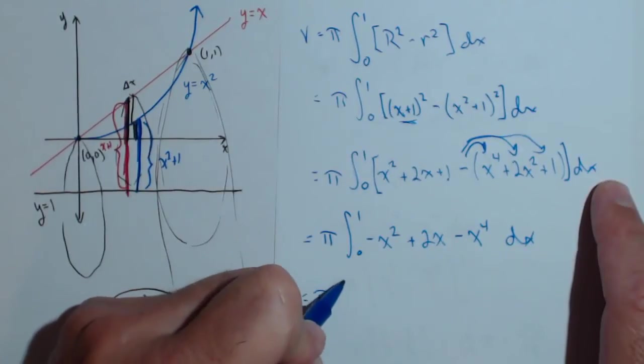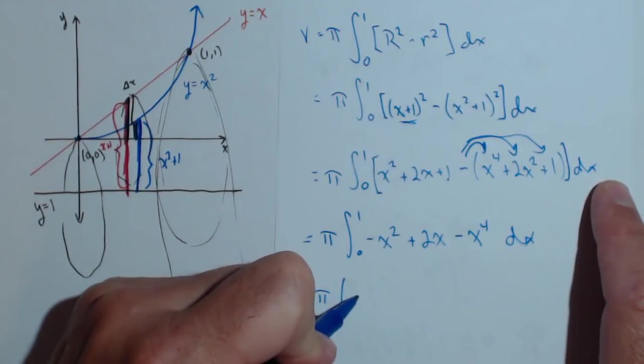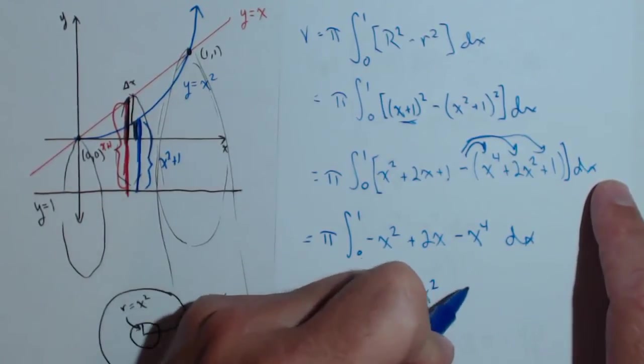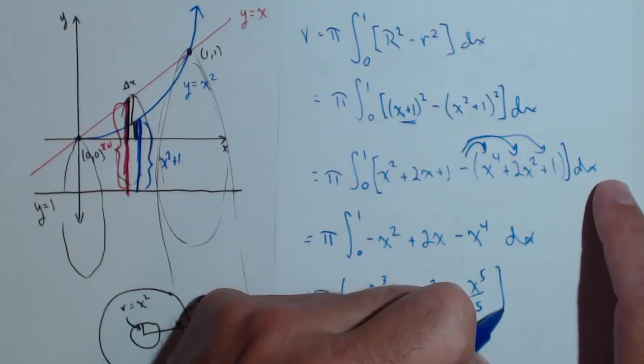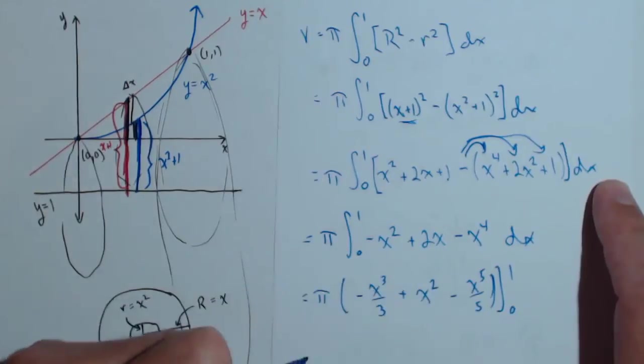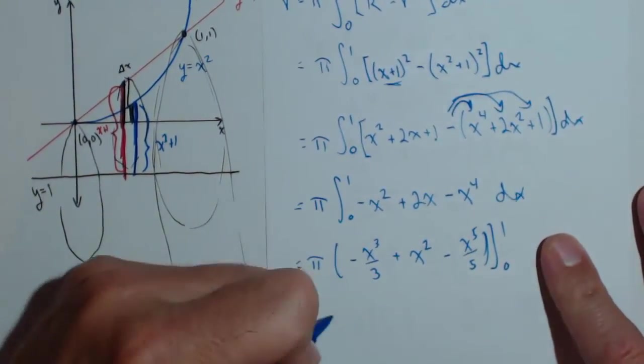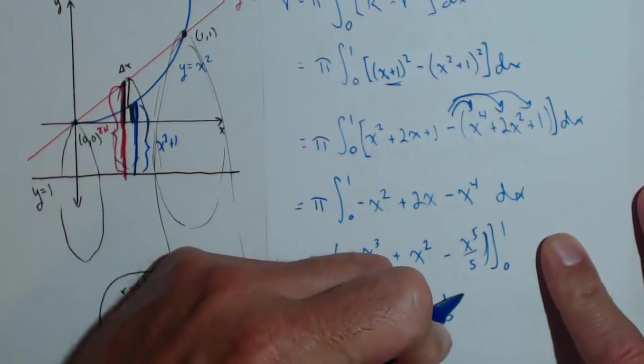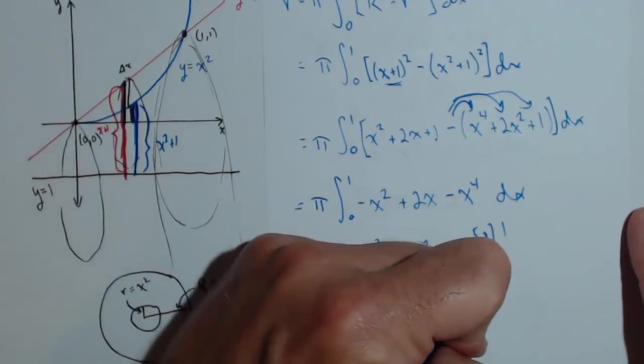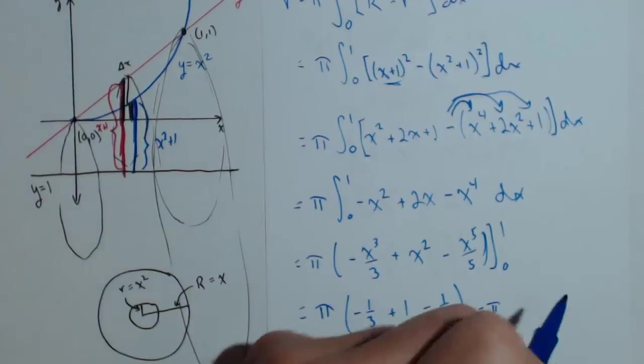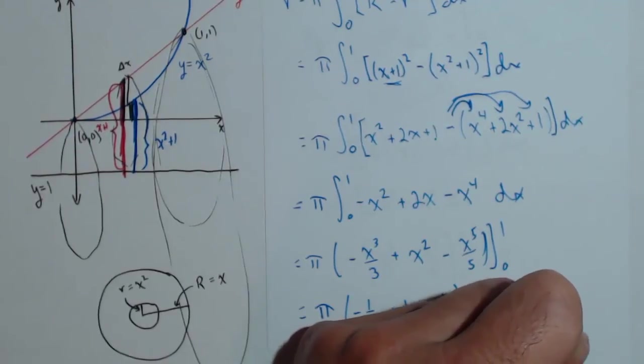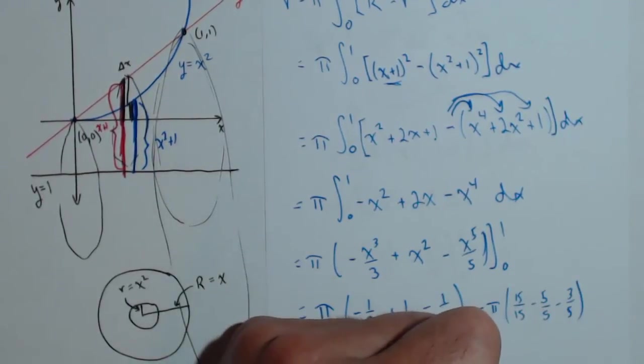I'll just do this one piece by piece. When I go to find my antiderivative, we'll have negative x cubed over 3 plus x squared minus x to the 5th over 5 from 0 to 1. And again, I'm not going to have to worry about the lower limit since it's 0. So I'll have pi times negative 1 3rd plus 1 minus 1 5th. Pi will have 15 5ths minus 5 5ths minus 3 5ths, minus 8 5ths. So when all is said and done, we're going to get 7 pi over 15.